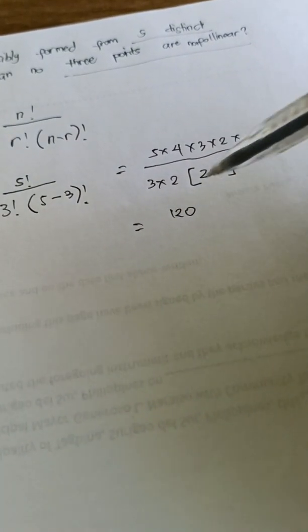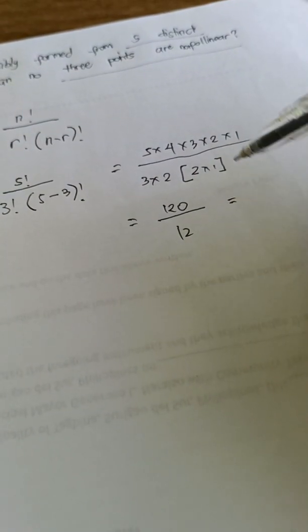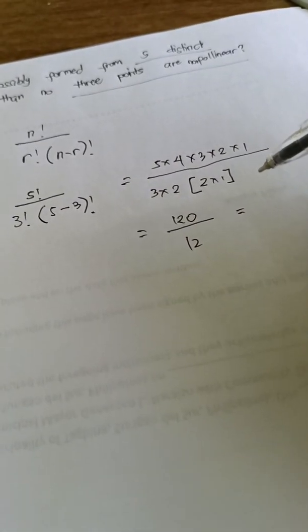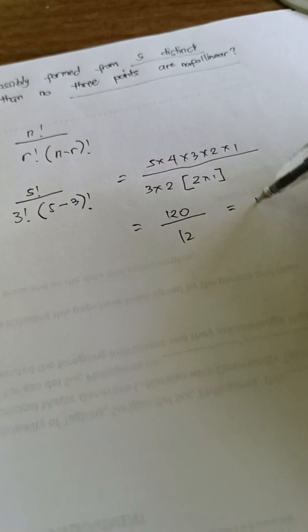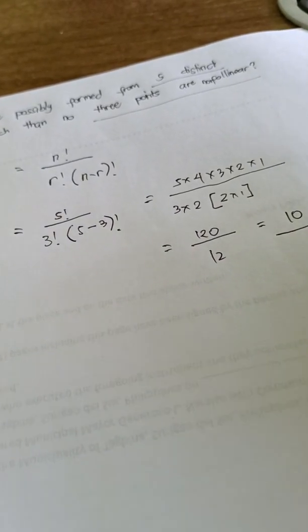And the first one is C(5,3) equals n is five factorial all over three factorial times (5-3) factorial. So five factorial is five times four times three times two times one all over three times two, and 5-3 is 2 factorial, so it's two times one. So it will be 120 all over 6, three times two is 6, so 6 times 2 is actually 12. So meaning if we're going to choose three out of five distinct points, it has an answer of 10.